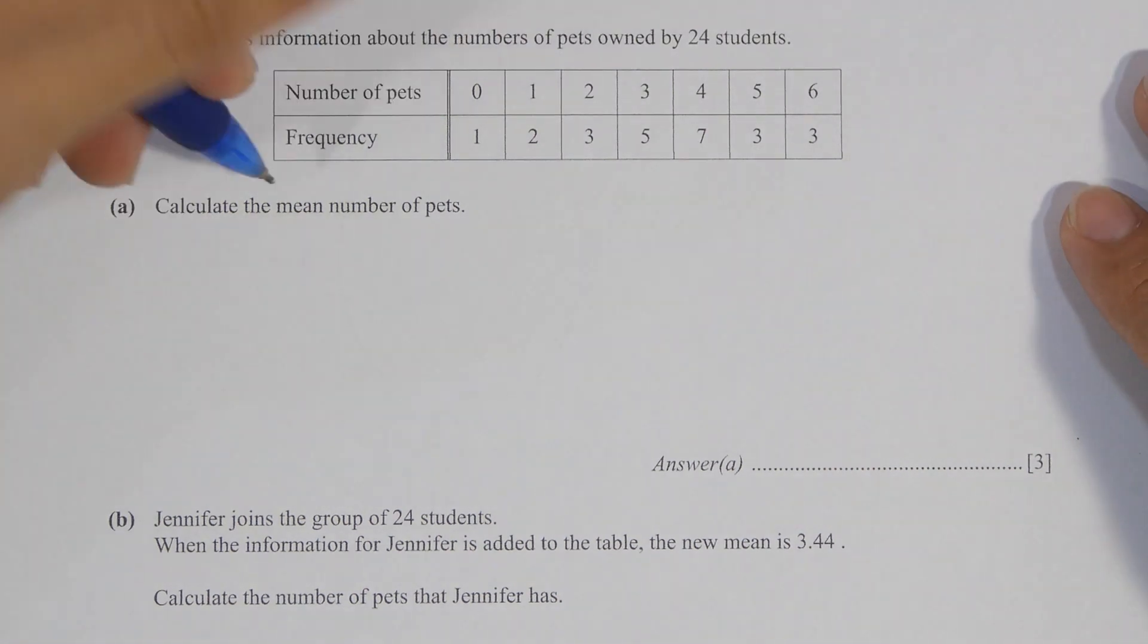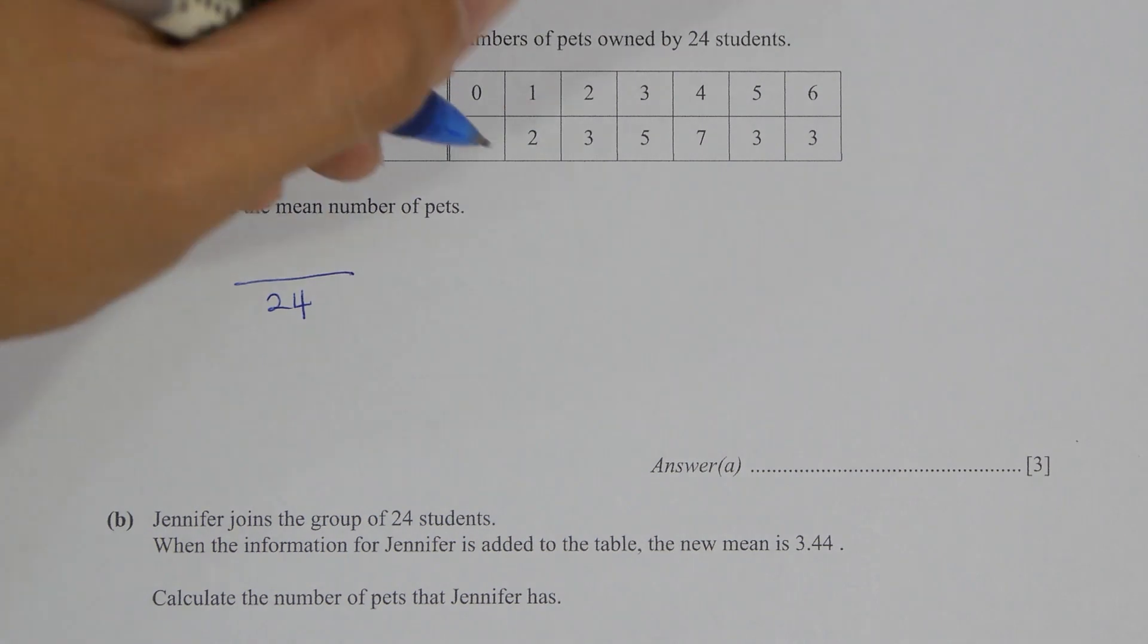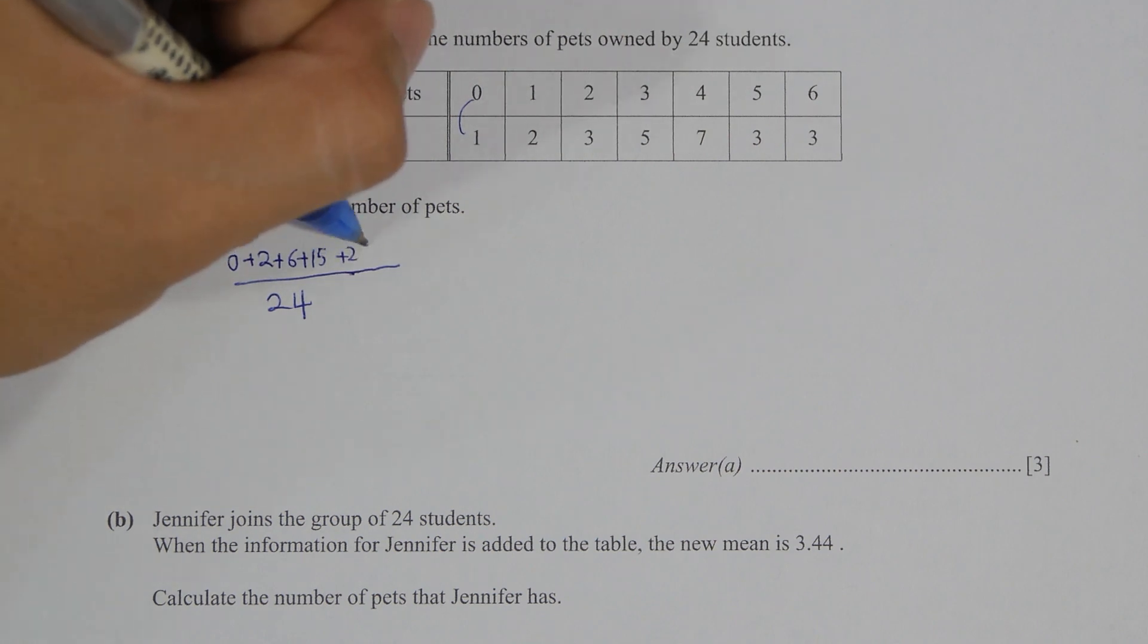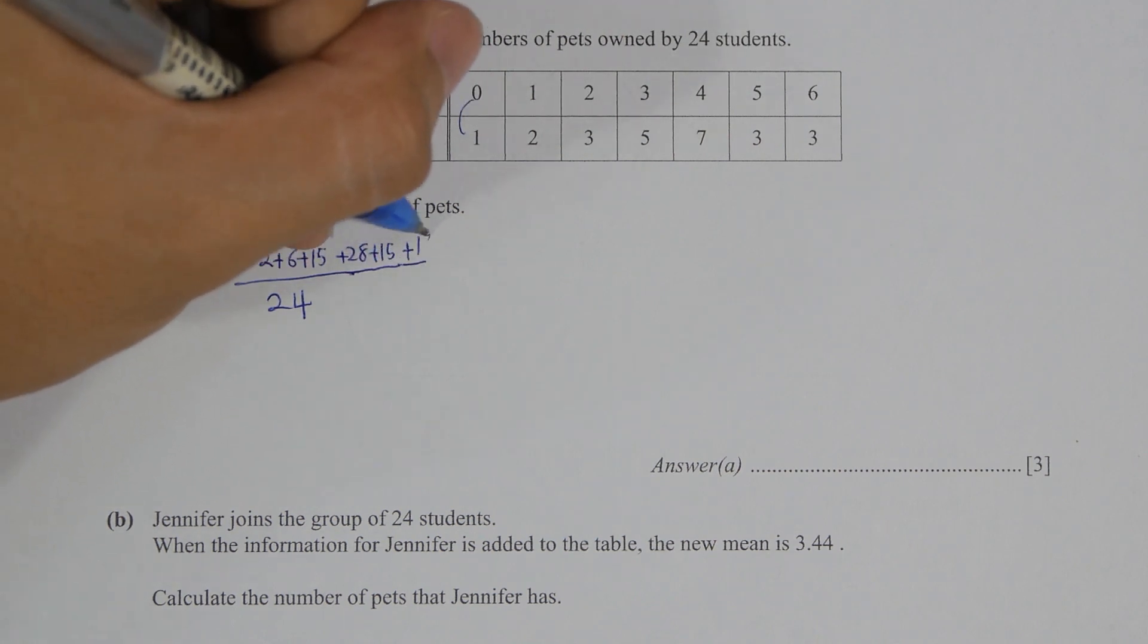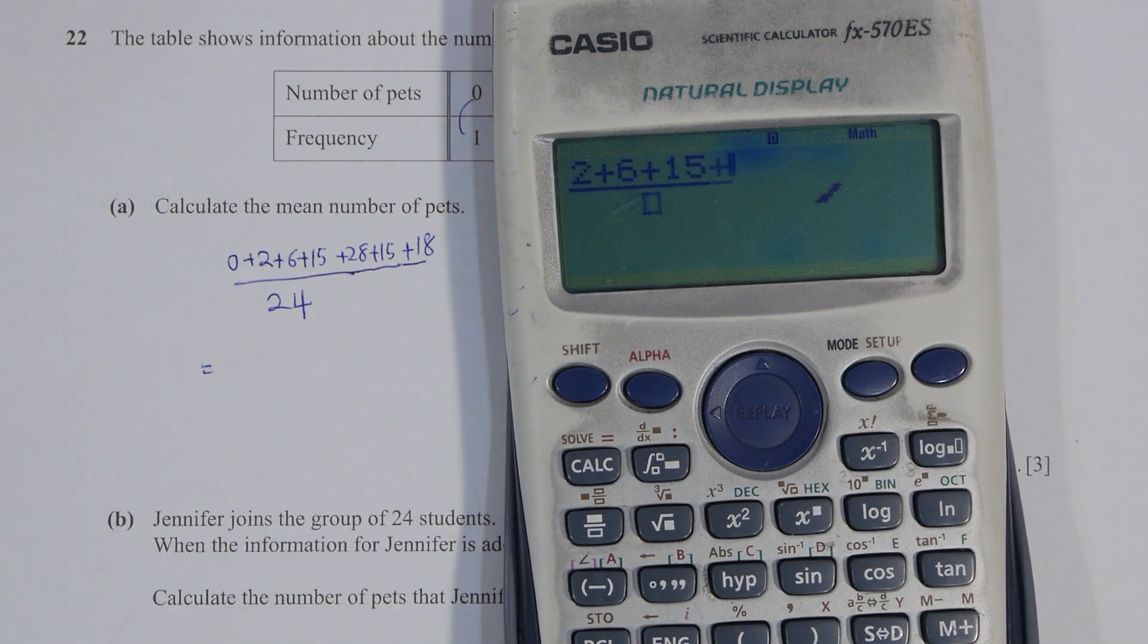So for question 22, find the mean number of pets. Simply take the frequency multiplied by the respective numbers of pets, add them all up and divide by 24. So the mean number of pets will actually be 3.5 here.